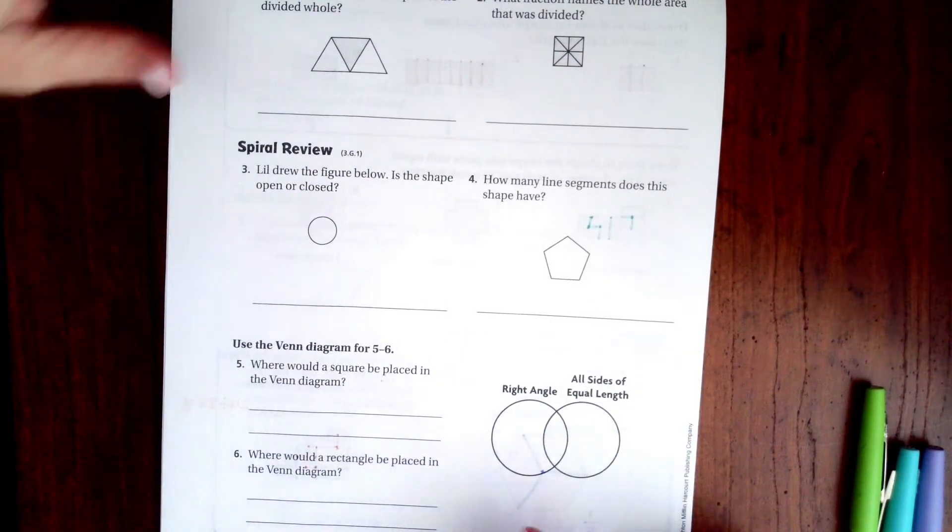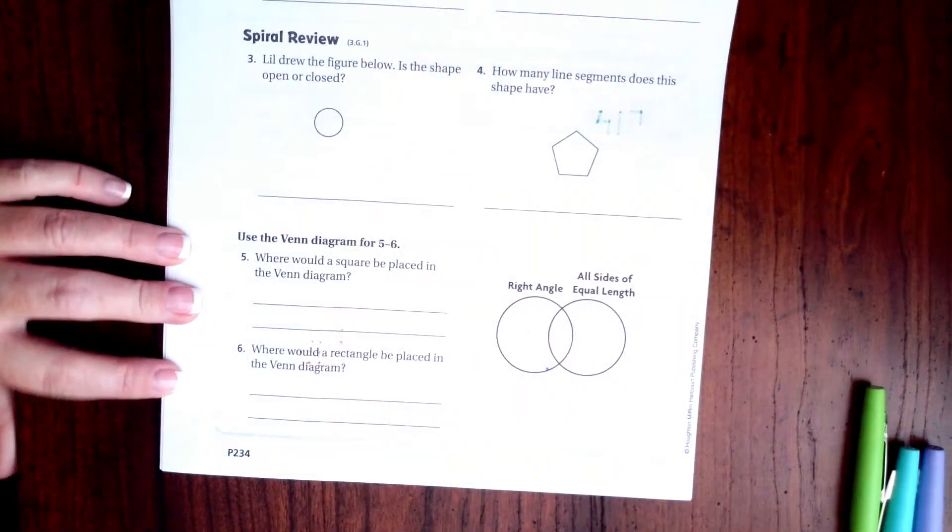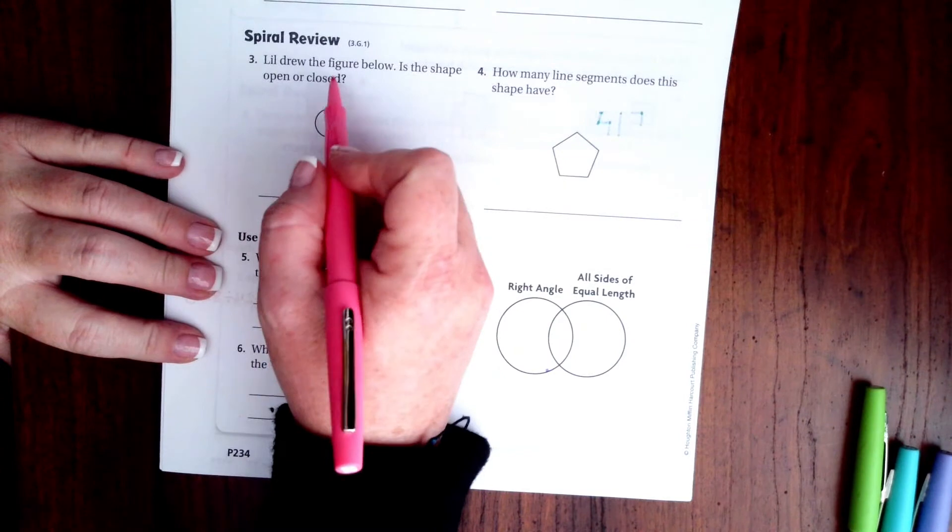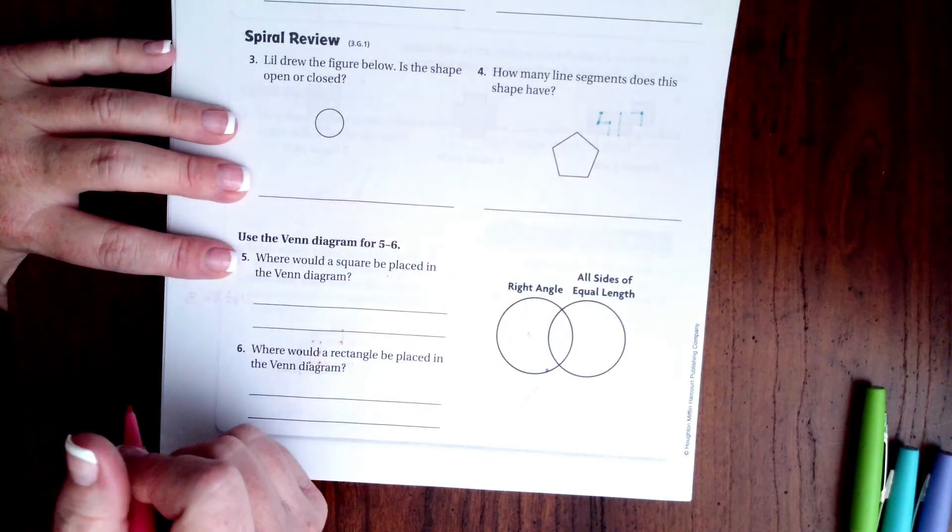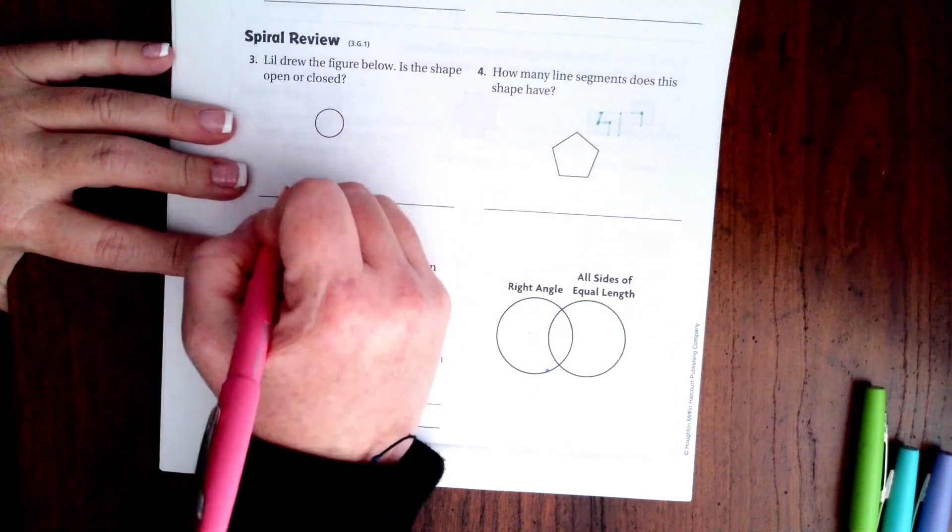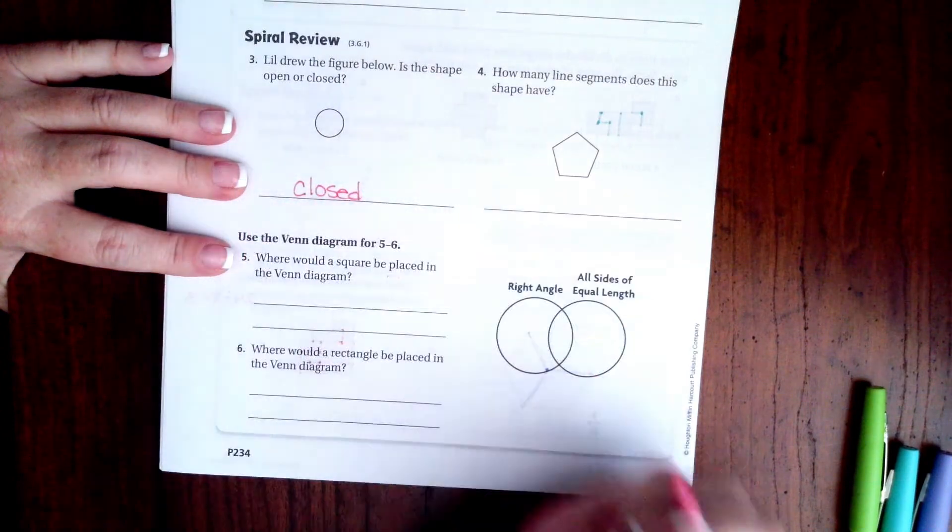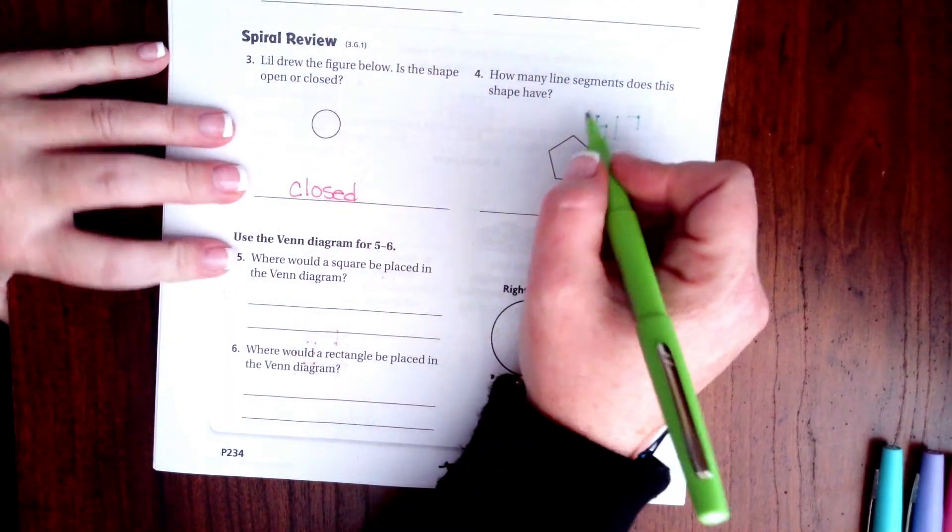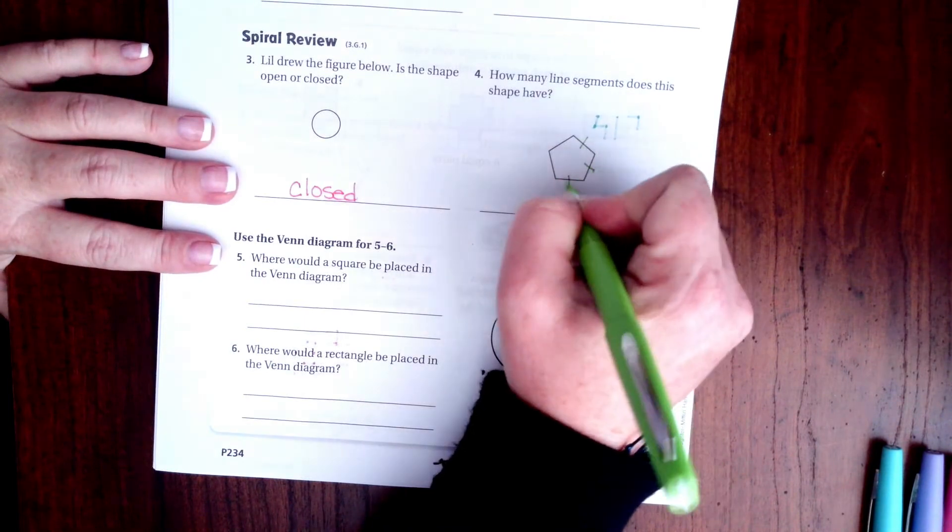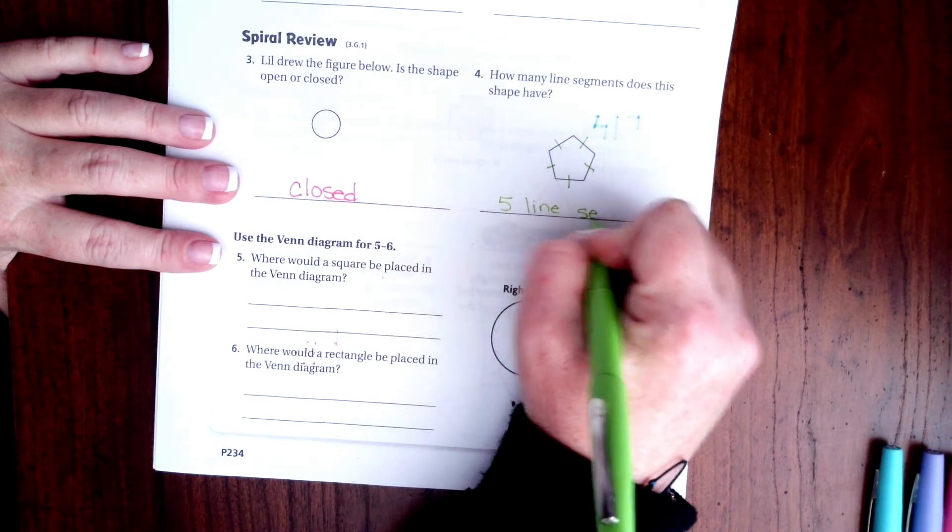All right, it says Lil drew the figure below. Is the shape open or closed? Well, there is no opening here, so it is closed. Okay, how many line segments does this shape have? One, two, three, four, five. Five line segments.